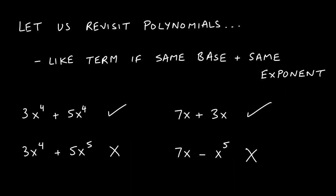Let's take a trip down memory lane and think back to polynomials. When we were adding and subtracting polynomials, we always did so with like terms. Two terms were like terms if the bases were the same and the exponents were the same. So here we have x to the fourth — x is the base, 4 is the exponent — and x to the fourth again. These two terms are like terms because their bases and exponents are identical, so we could add them together and get 8x to the fourth.